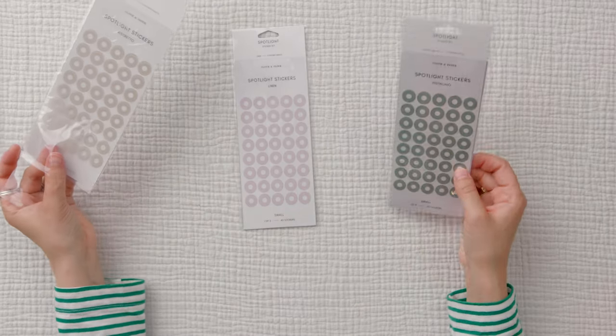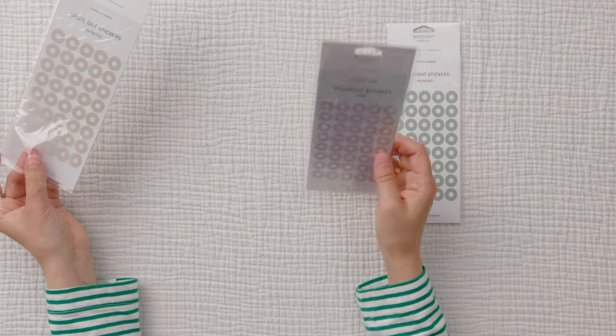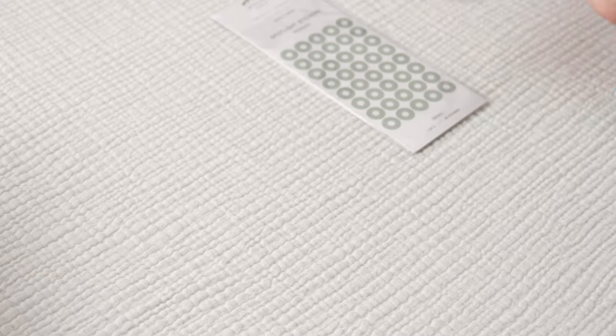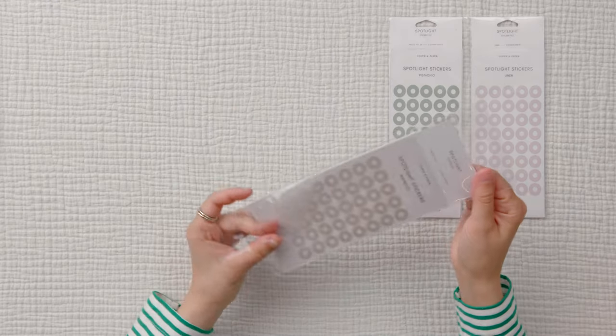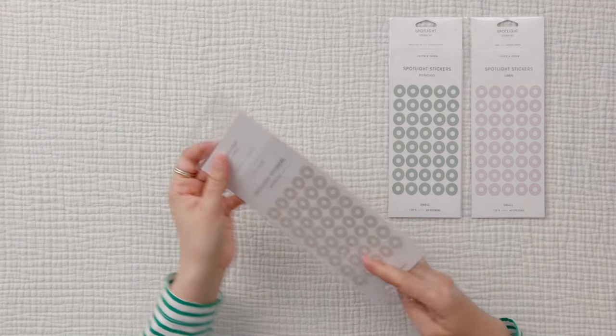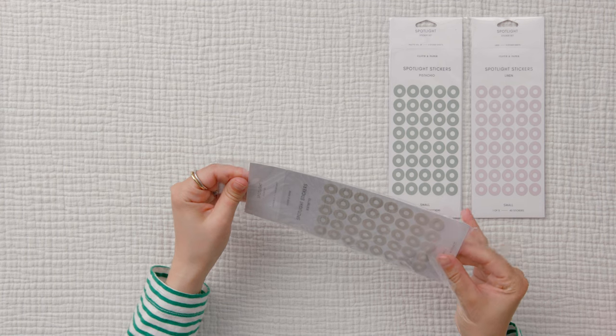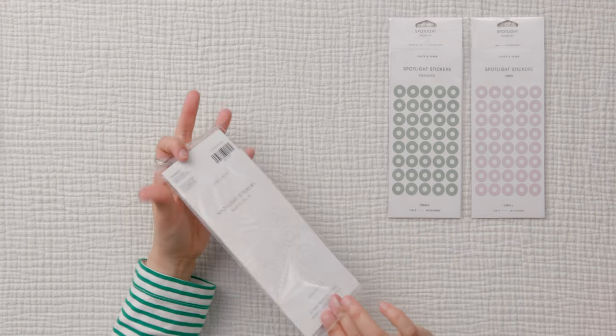So I got these in the color pistachio. I love green. And then we have linen. Cloth and paper's linen comes off as pinkish. And then this one here, I'm going to open this one up because when I saw this online, it looked like it came with three different colors.